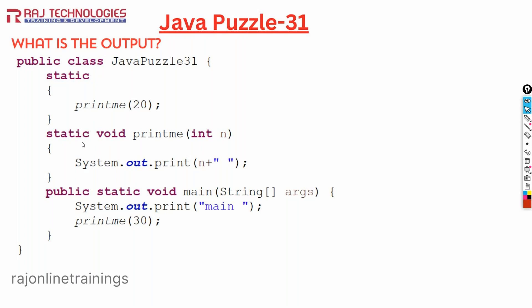This is a static void method called printme. Whenever you take a static block, it can access only other static members directly — that's the point we should remember. That's the reason printme should also be static. In printme, the value 20 is passed to argument n, and we are printing the value of n in this printme method.